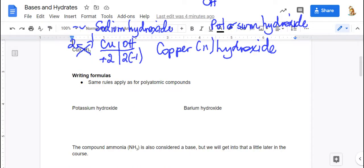Writing formulas for bases. The same rules apply as for polyatomic compounds. So potassium hydroxide. If you're dealing with the cross and drop rule, you've got potassium with charge of plus one. You've got hydroxide with a charge of negative one. And you do your cross and drop or you do the zero sum. They add up to the same number. So this formula is KOH.